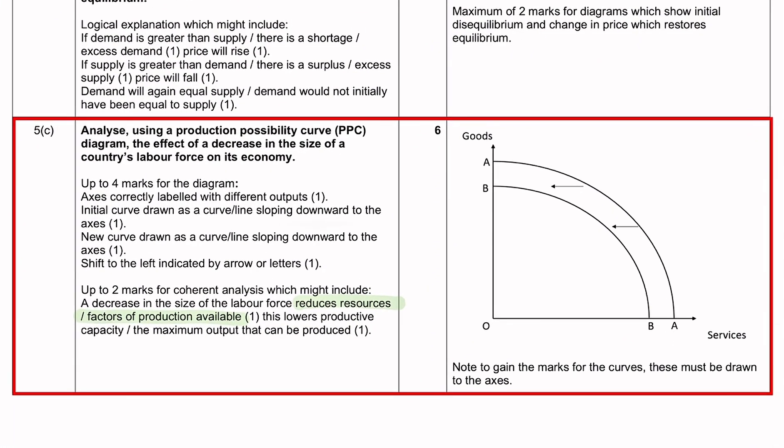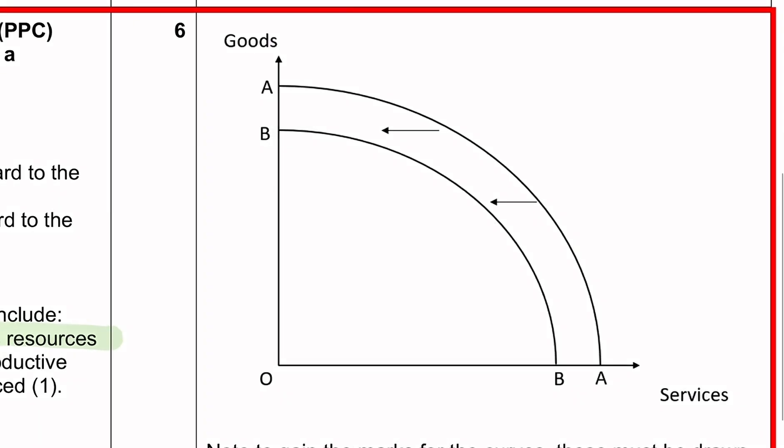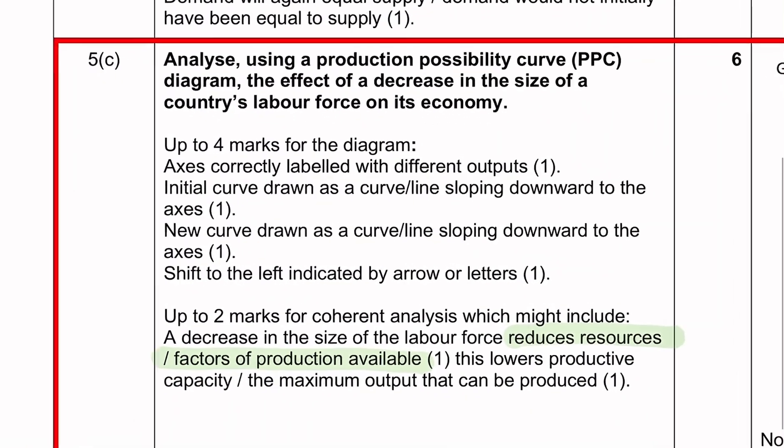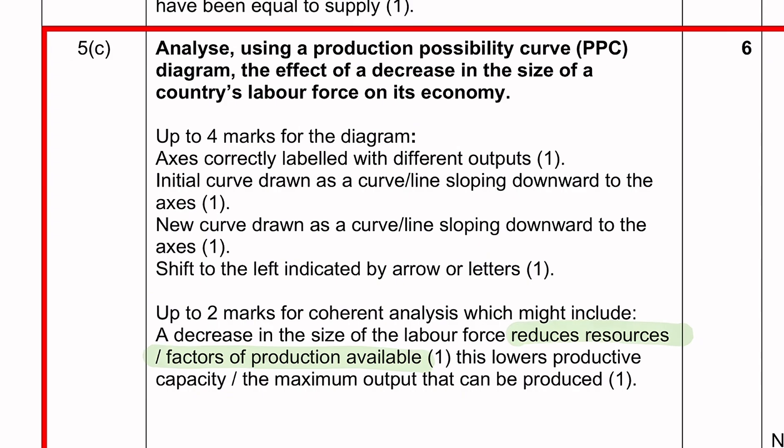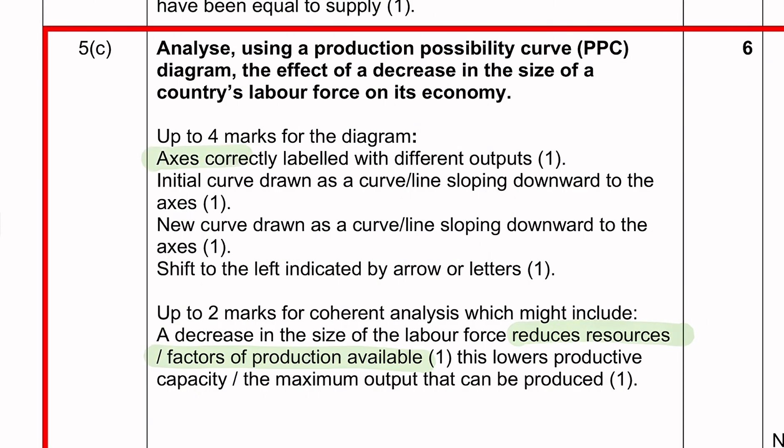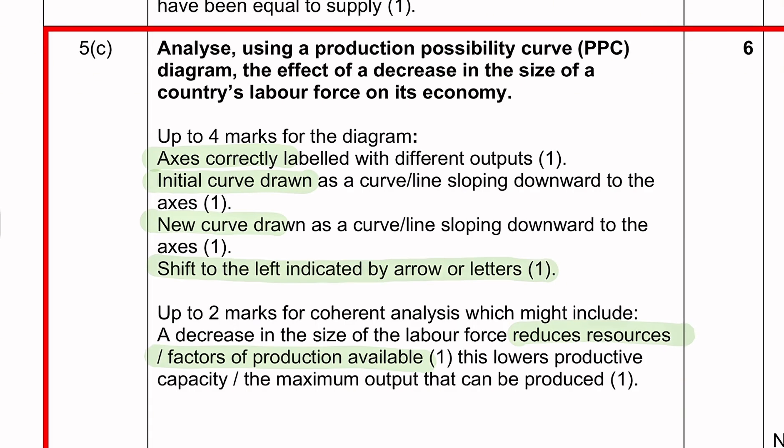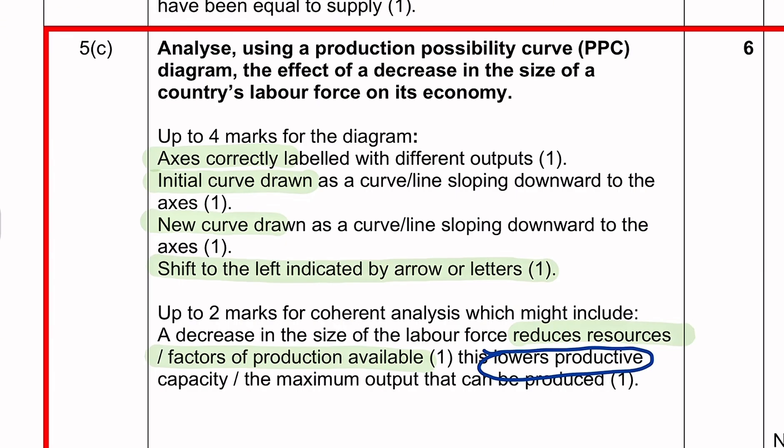So this is the mark scheme. So as we can see here, the diagram drawn is correct. And these are the allocation of marks. Axes correctly labelled, initial curve drawn, new curve drawn, and also shift to the left indicated by an arrow or letters. The candidate did say lowers productive capacity, but did not give a reason to this, which is reducing its resources.